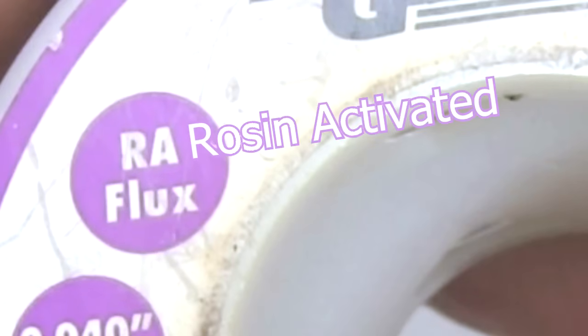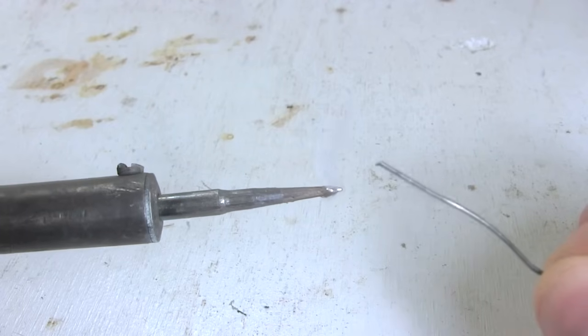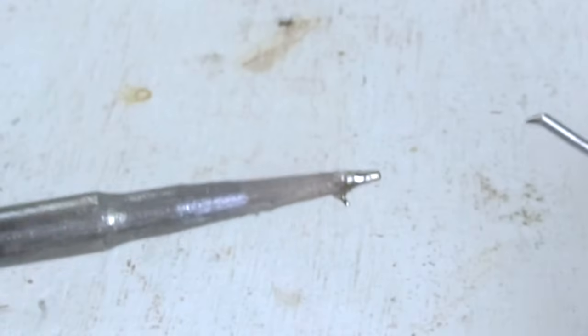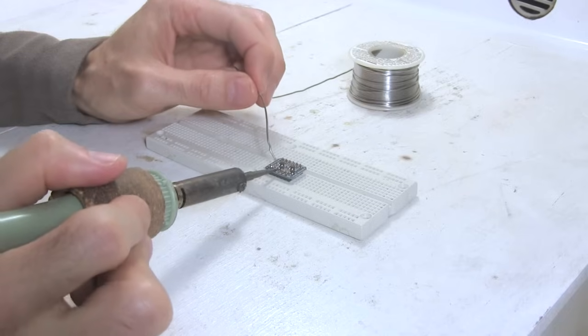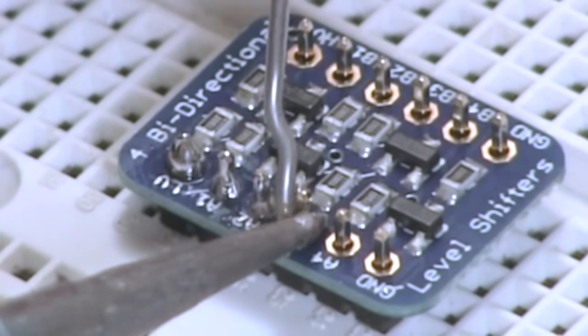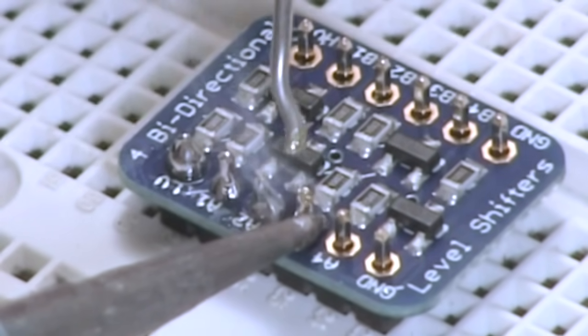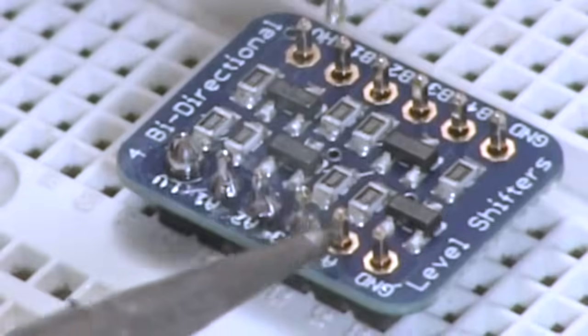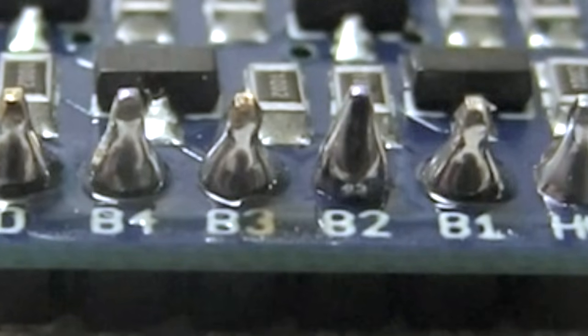With the soldering iron heated up, put a little solder on the iron, just to help with heat conduction. Then briefly touch both the circular metal pad on the board and the pin at the same time, and apply some solder. The solder should flow onto the pin and the pad. You should end up with solder on both, and a nice cone shape, not a ball.